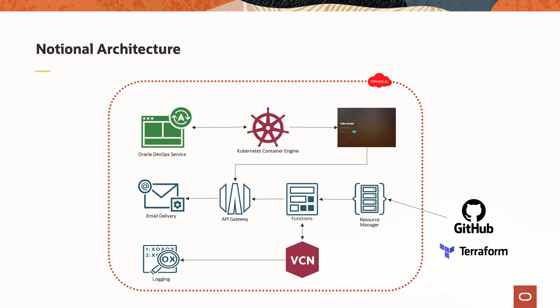Here's a notion architecture for this demonstration. We will be using OCI DevOps platform to configure our build pipeline and deploy our Node.js application on a Kubernetes cluster. Also, we have configured the resource manager to deploy the functions, API Gateway, and VCN using the Terraform script. When a user signs up for Code Innovate, it triggers the API created using the API Gateway, which in turn calls a function that sends out an email using Oracle email delivery service.